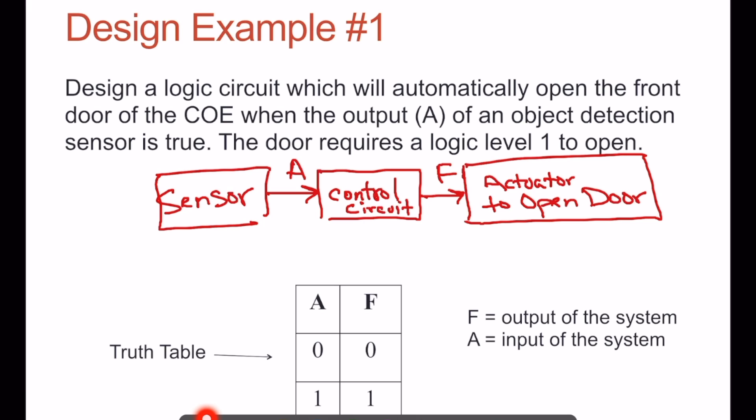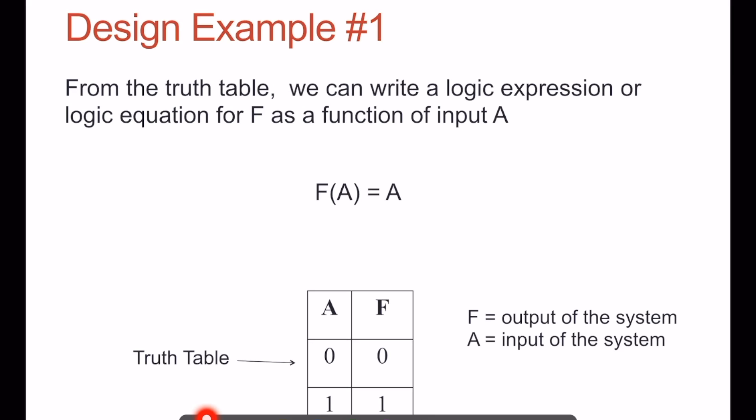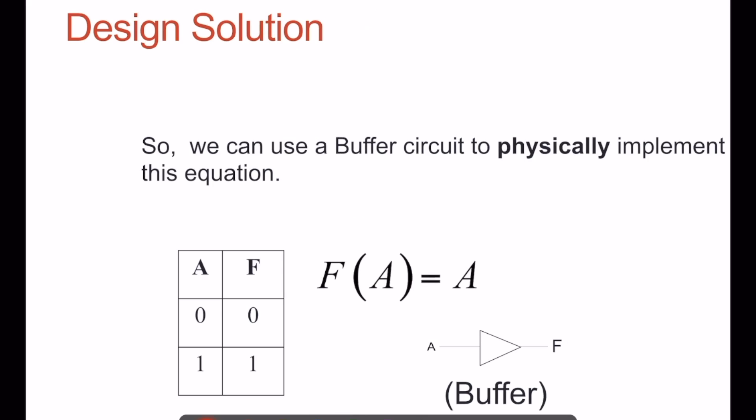This is very straightforward. You might recognize this as a buffer, and we can write the truth table as F of A is equal to A. This can be physically implemented using a buffer circuit.